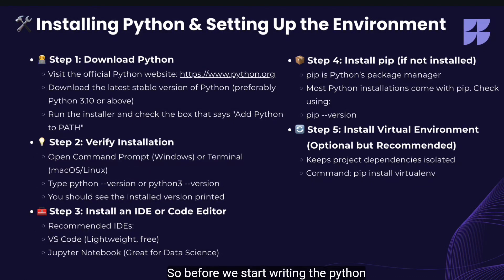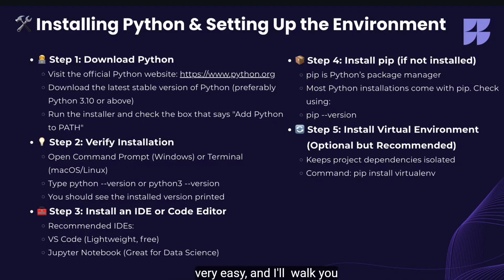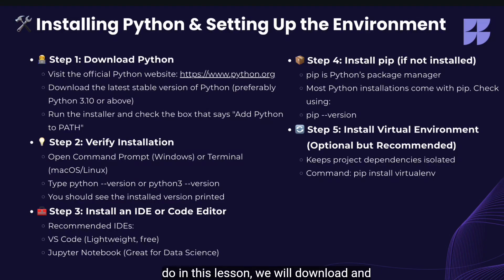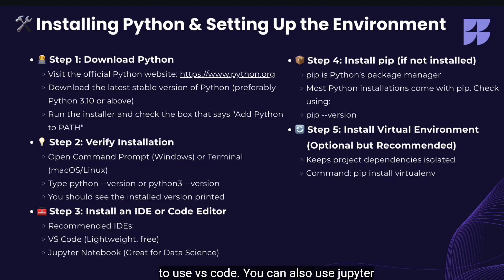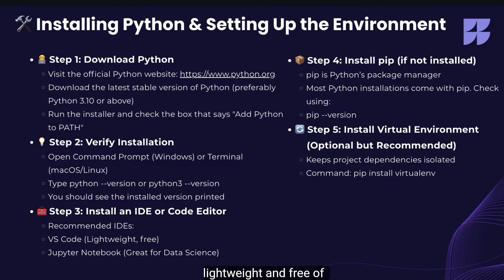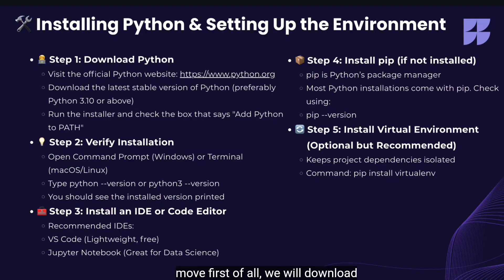Before we start writing Python code, we need to properly install and set up the environment on our computer. It's very easy and I'll walk you through every step. In this lesson, we will download and install Python, verify the installation, install an IDE or code editor — I'm going to use VS Code, which is lightweight and free — then install pip and set up a virtual environment.